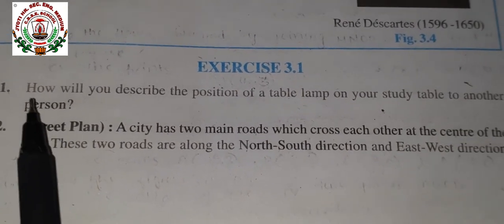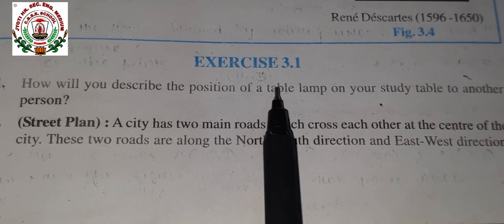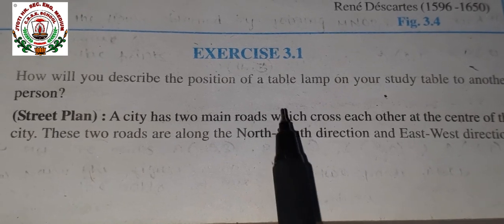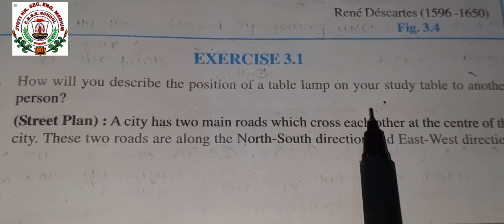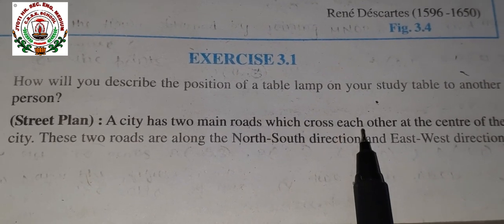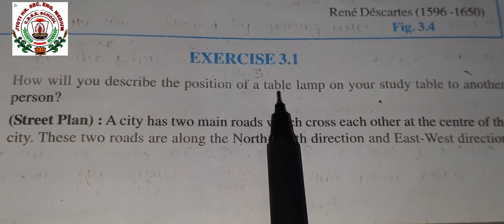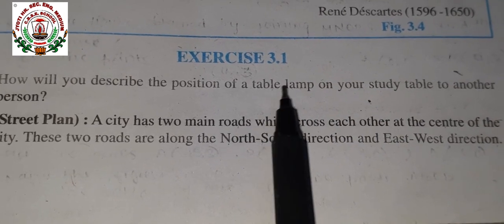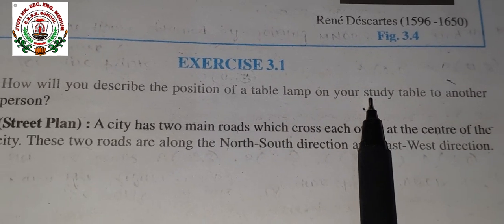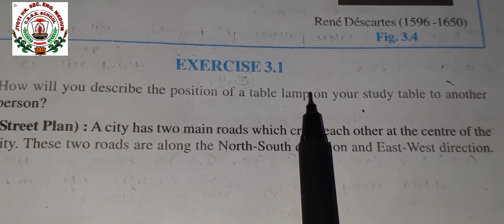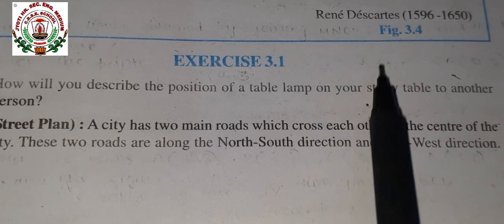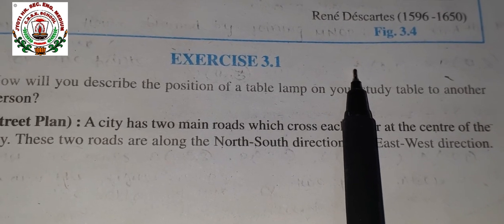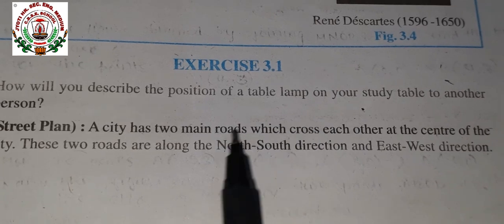First question is: how will you describe the position of a table lamp on your study table to another person? In this also, you will have to plot x-axis and y-axis in your graph paper. Your table lamp on your study table — that means everyone's wish will be different to keep the study lamp, so position the study lamp in your graph paper wherever you want, point out where it is, and do it yourself.